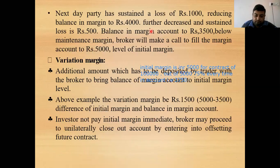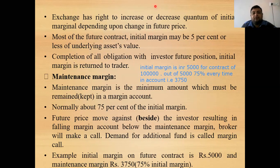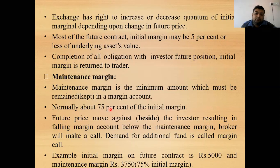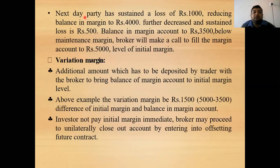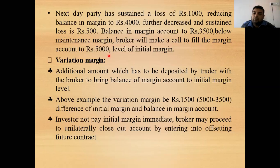To continue with the example: if the initial margin is ₹5,000 and the maintenance margin is ₹3,750 (75%), the next day the party sustains a loss of ₹1,000, reducing the margin to ₹4,000. It further decreases with a loss of ₹500, bringing the balance to ₹3,500, which is below the maintenance margin of ₹3,750. The broker will then make a maintenance call, asking the trader to restore the margin to the initial margin level of ₹5,000.